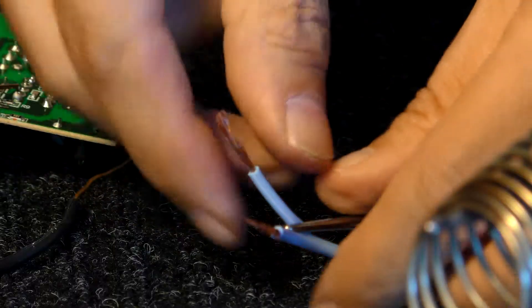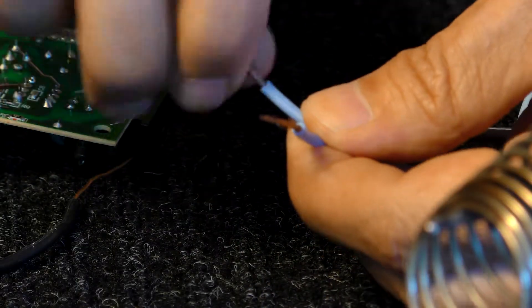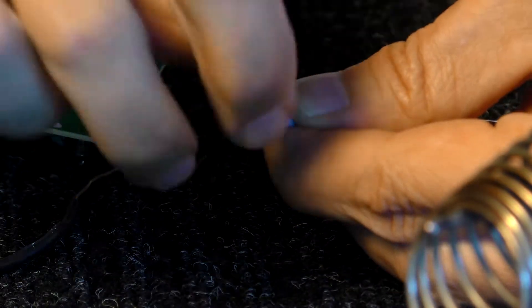We will first prepare the wires by taking all the strands and twisting them to form a solid strand.